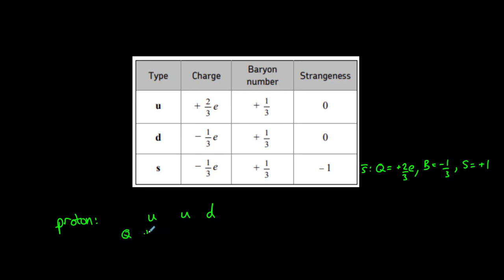An up quark has a charge of plus two-thirds, and a down quark has a charge of negative one-third, giving us a total charge of plus one, as we'd expect with a proton.